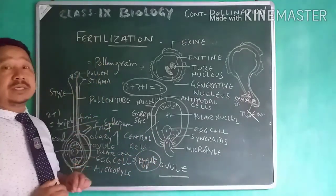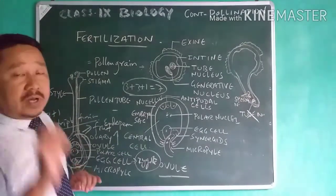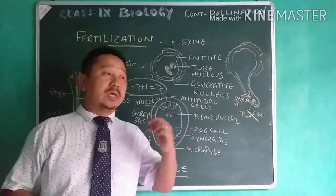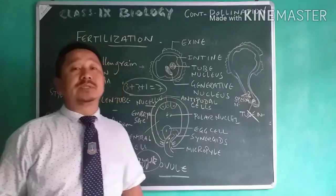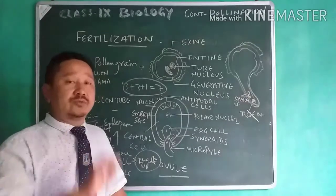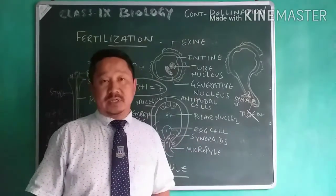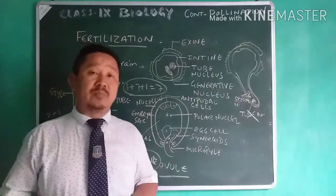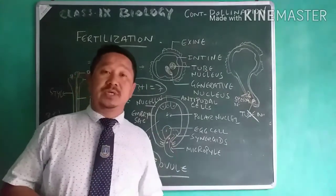So this is how we conclude this chapter on pollination and fertilization. This is how a seed is formed. If there is only one ovule in the flower, one seed is formed. But in many fruits you find thousands of seeds — in such cases there are many ovules. If there are five ovules, five seeds are formed; if there are a thousand ovules, a thousand seeds are formed — like in the case of papaya. Thank you very much.